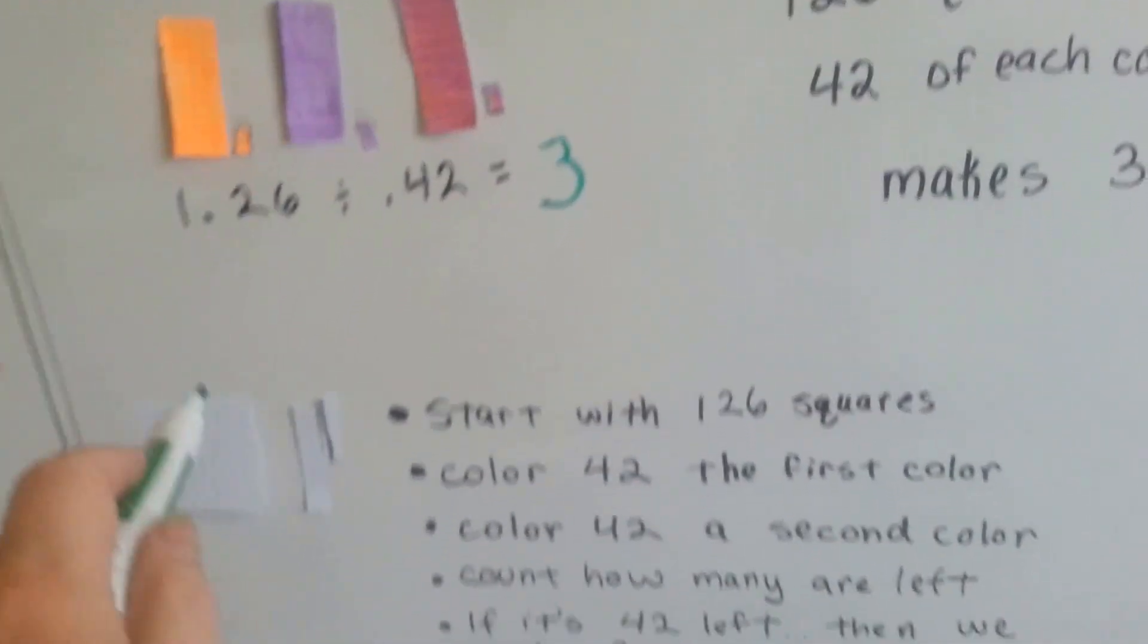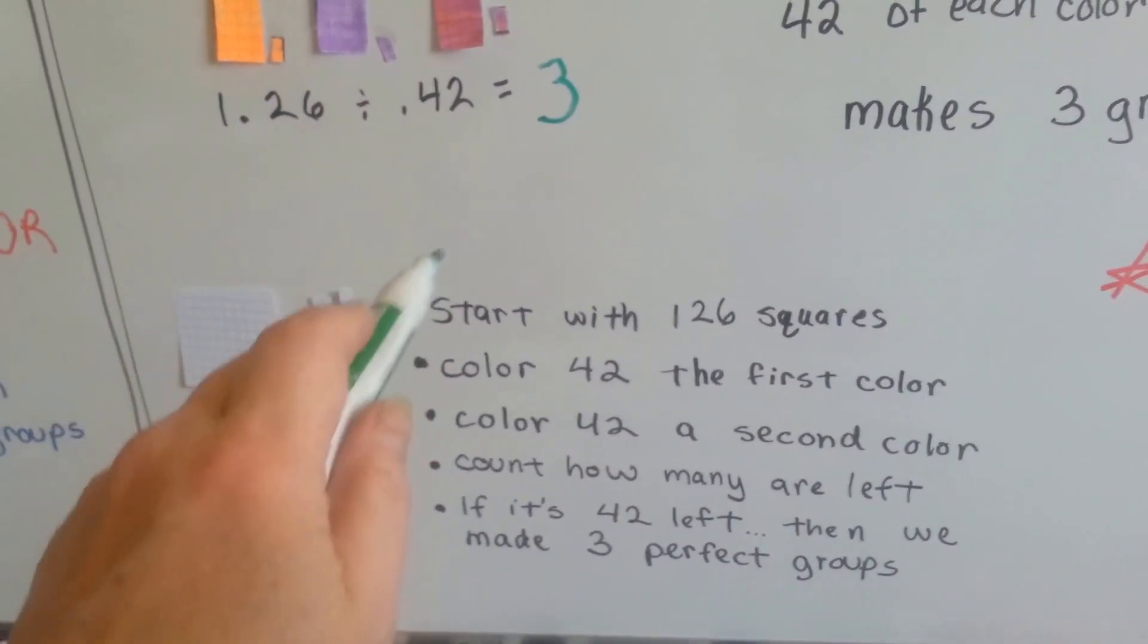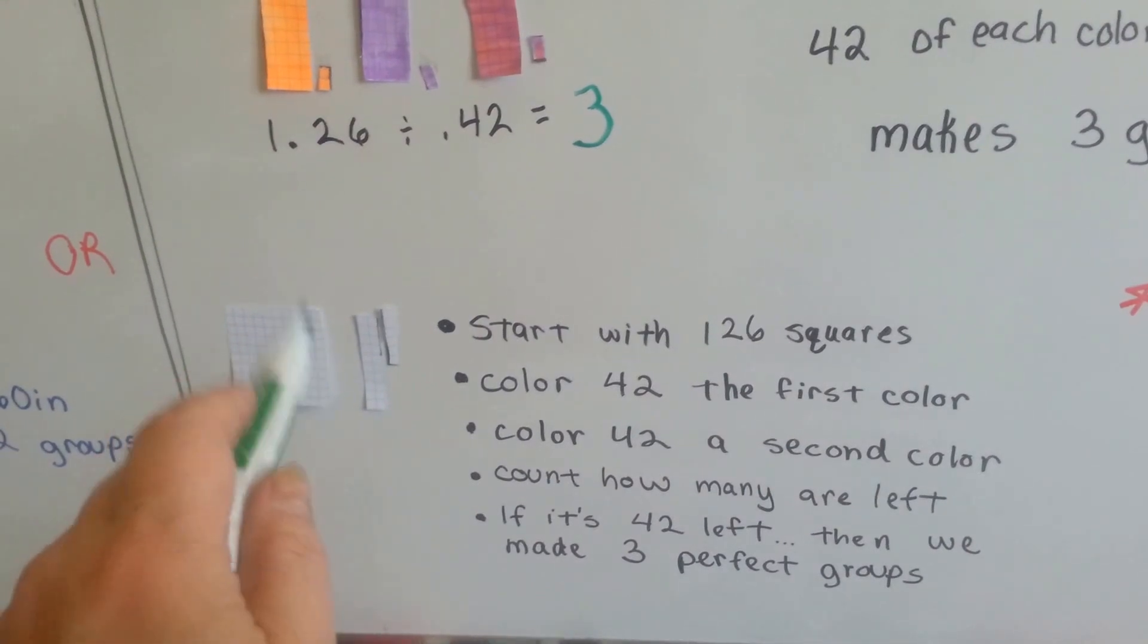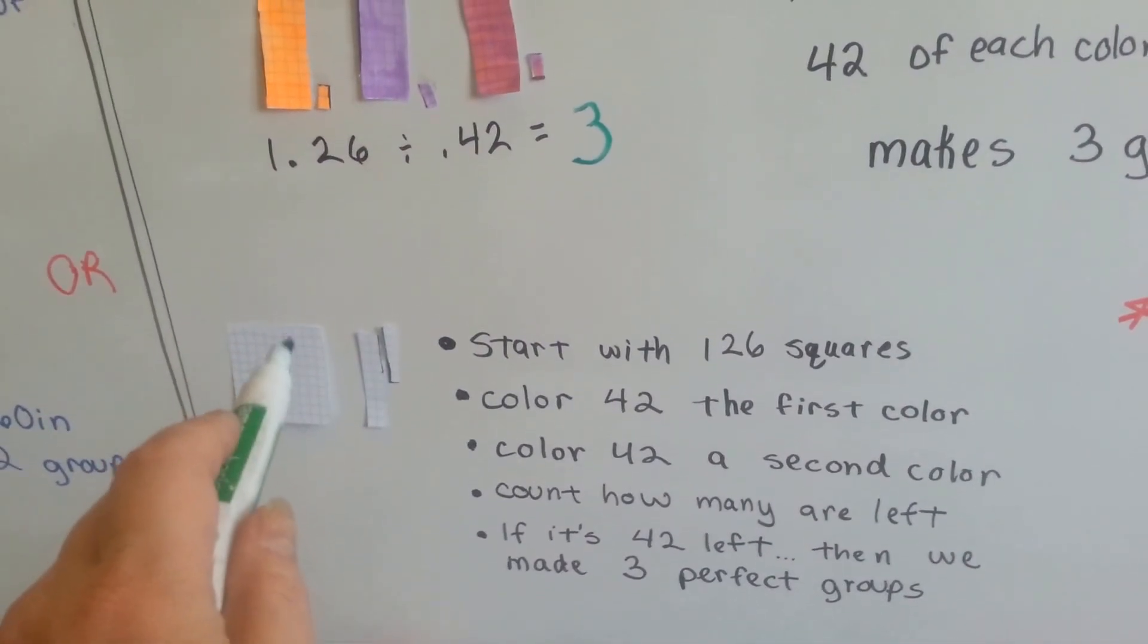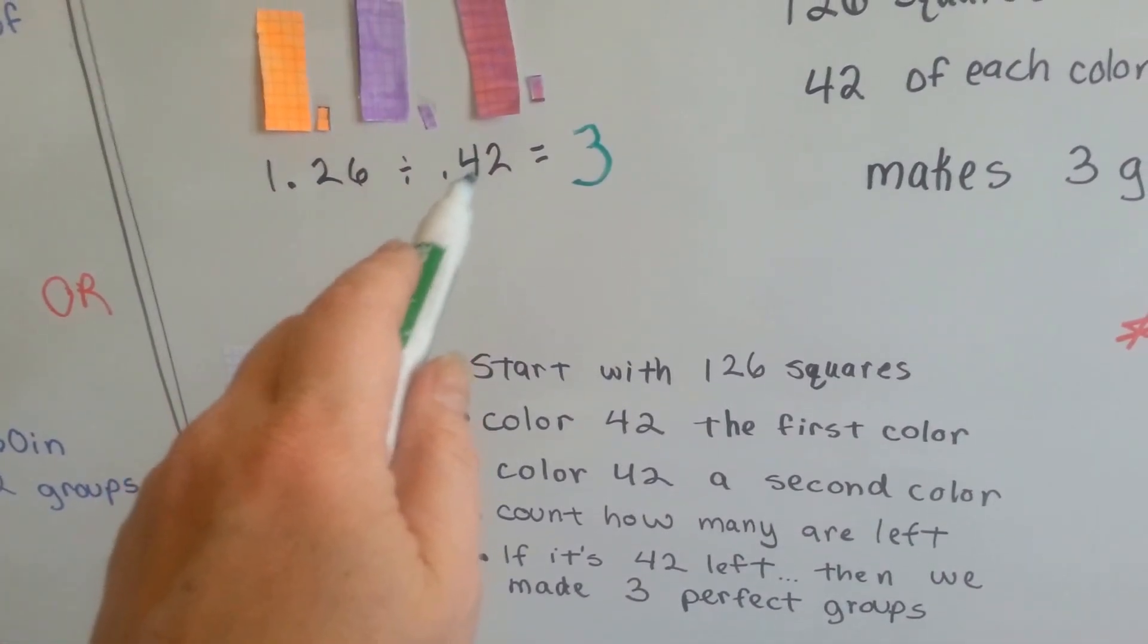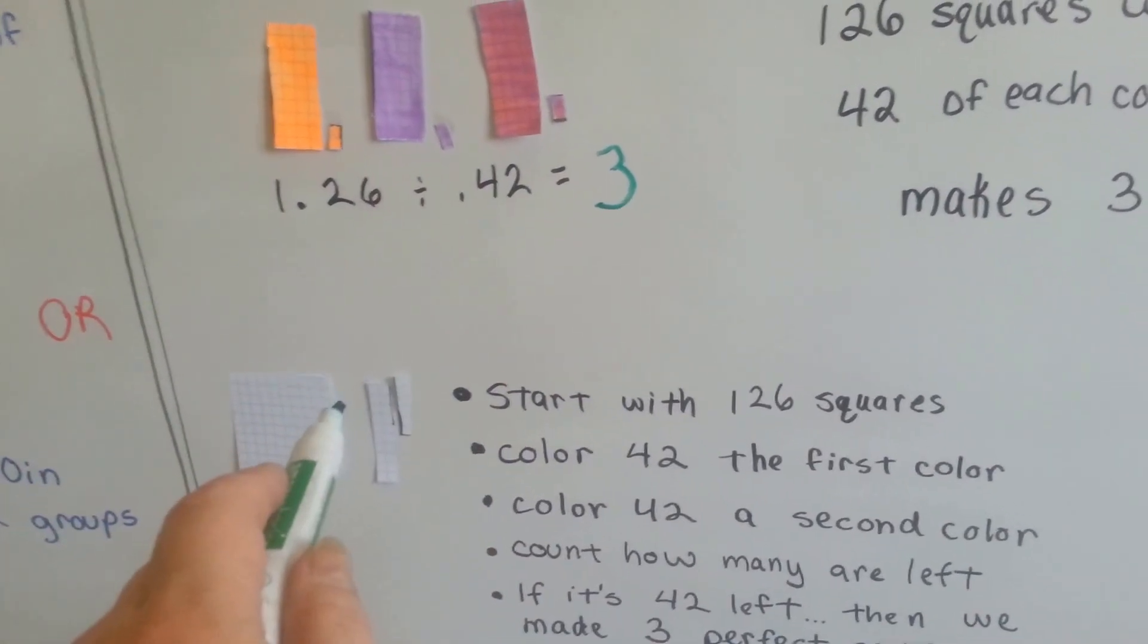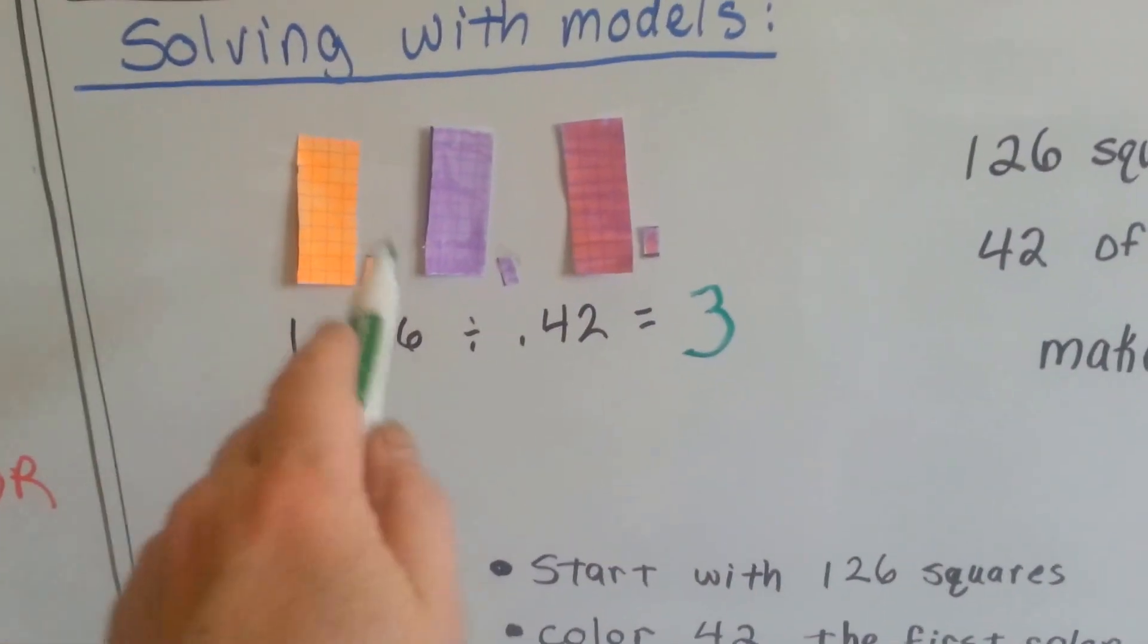What if, after coloring them in, we came up with the wrong number, like forty-five? Well then, you may not have counted your squares correctly, because we're coloring them into groups of 42, okay? Or it might mean there's a remainder, okay? If it comes out perfect and even, then we know that there's three groups.